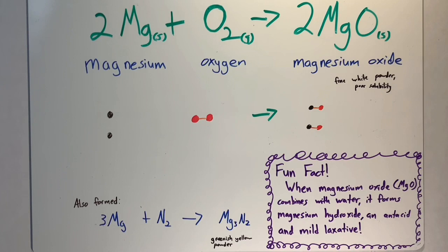So in this reaction, magnesium is reacting with the oxygen in the air and forming magnesium oxide. Also, sometimes you get some magnesium nitride from the nitrogen in the air. That's usually a greenish yellow powder. And most of what we saw was a fine white powder, which is magnesium oxide.